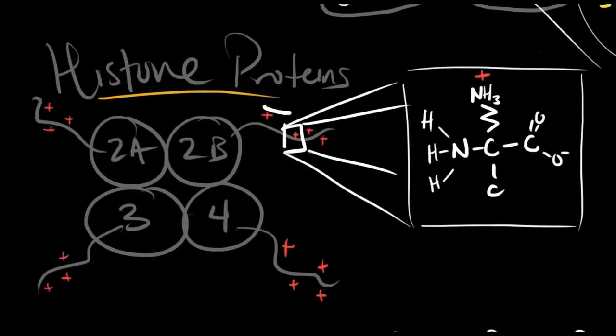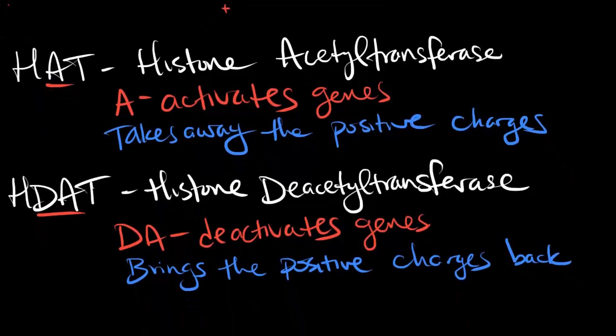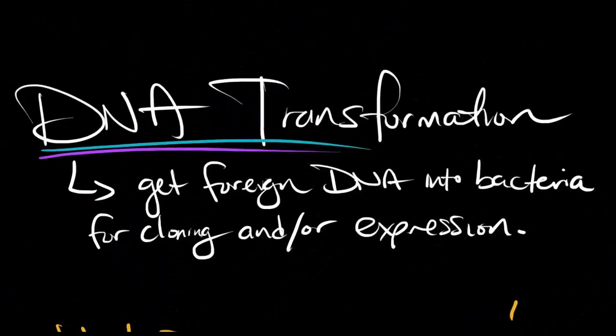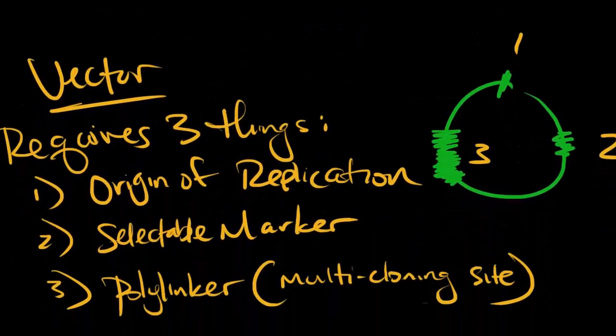Histones have 8 subunits: 2 copies of 2A, 2B, 3, and 4. There's also an H1 protein that helps keep it all together, but isn't part of the core histone. Instead, it's in the linker, which is the stretch of DNA that connects two different nucleosomes.